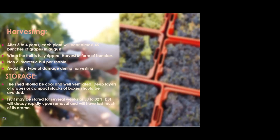Grapes are a non-climacteric fruit but highly perishable due to their high water content, making them susceptible to damage. For storage, the shed should be cool and well-ventilated. Deep layers of grapes in compact stacks should be avoided. Temperature of 30 to 32 degrees Fahrenheit is recommended. Grapes can be kept in cold storage, but once removed they may lose their aroma.